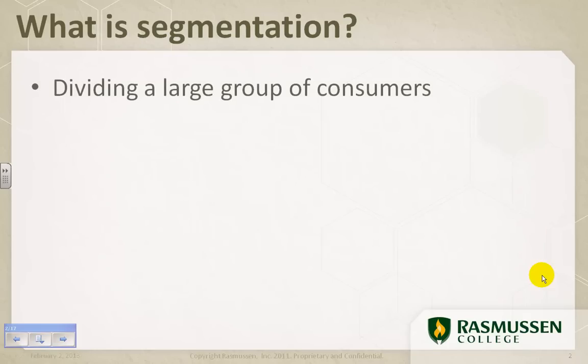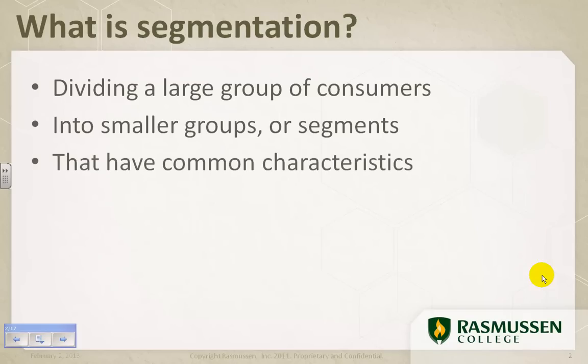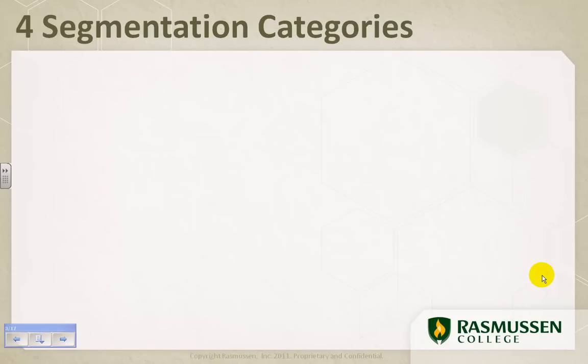So, the first step in segmentation is dividing a large group of consumers into categories. As I mentioned in my previous video about why segmentation is important, if you try to speak to all adults 18+, how do you truly get to understand them? Secondly, once you've divided this large group into smaller groups and segments, then you're looking for the common characteristics. And the rest of the video is about the methods you can use to group consumers into common characteristics to better speak to them with your marketing message.